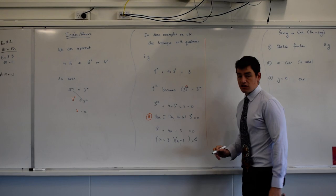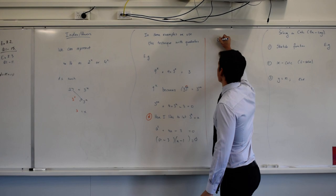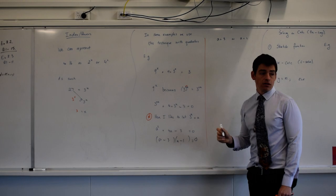So the only way that that equals 0 is if a equals 3 or a equals 1. So we say a equals 3 or a equals 1. What do you reckon I do now?